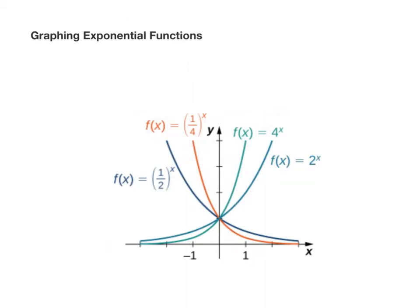Next, graphs of exponential functions. If the base is greater than 1 — like 4^x or 2^x — to the right of the y-axis the graph blows up real big, and to the left it gets closer and closer to the x-axis. If the base is a fraction between 0 and 1 — like one-half or one-fourth — the graph starts out large to the left of the y-axis, and moving to positive x-values it approaches the x-axis. Being familiar with what they look like is always good.